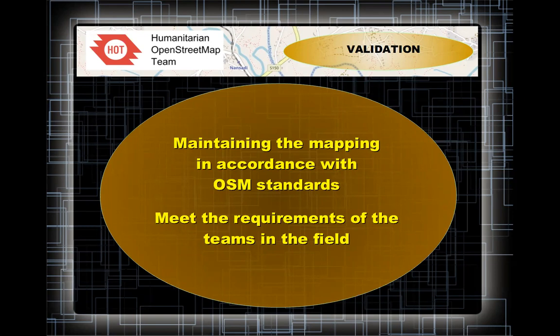Because we are doing humanitarian and disaster mapping, we are mapping specifically for the teams in the field trying to do their job. We have to meet their requirements, and each project is set up specifically for them. We need to read the instructions of each project carefully to understand what we're trying to achieve. Some projects will be buildings only, others land use only, others buildings and roads — so please read the instructions carefully so that when we start validating, we know what we're supposed to produce for those teams in the field.